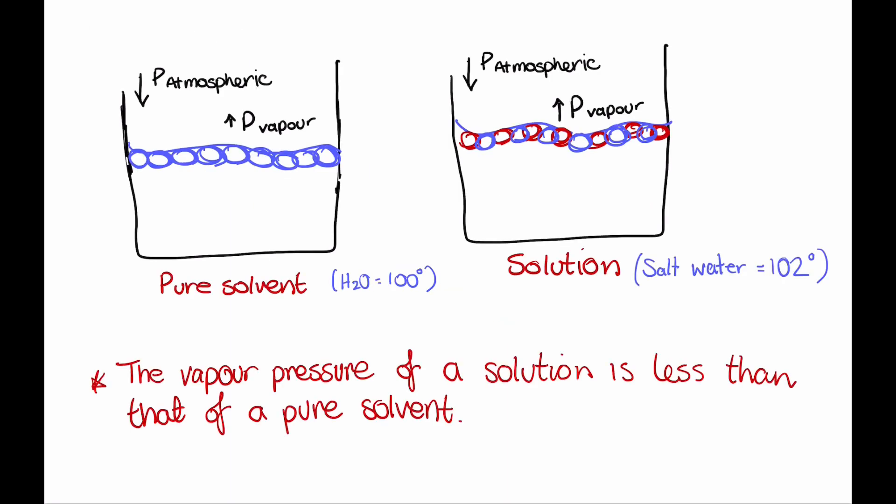A good way to understand Raoult's law is with these diagrams here. We know with pure water the boiling point is about 100 degrees celsius, and one of the implications of Raoult's law is that because there is a decrease in the vapor pressure when you have a solution, there will also be a change in the boiling point and typically we see an increase in the boiling point.